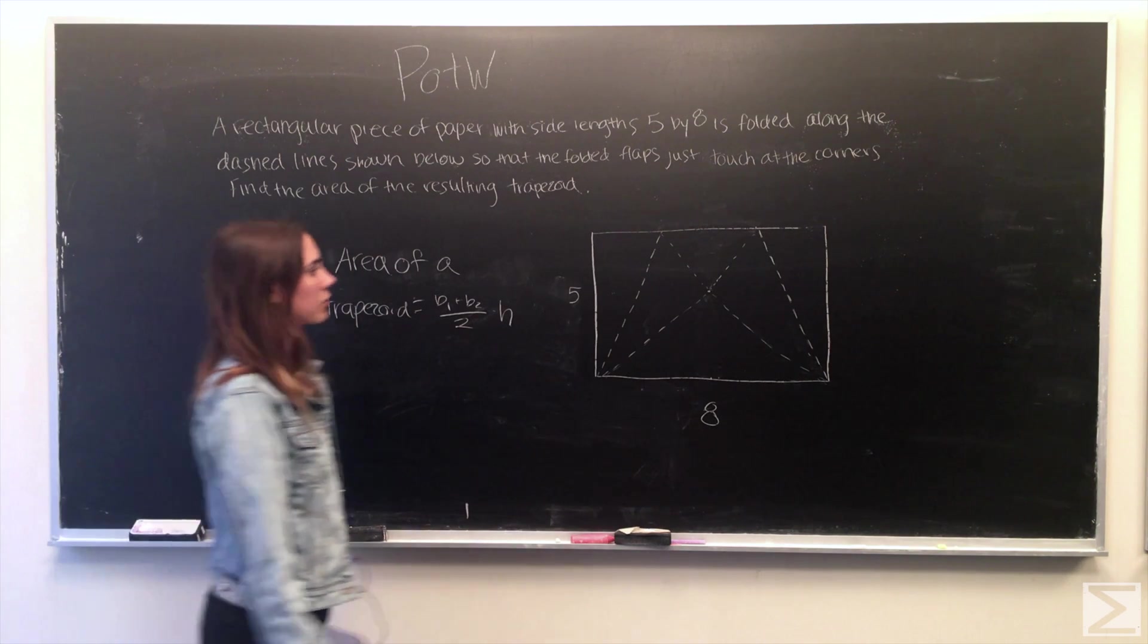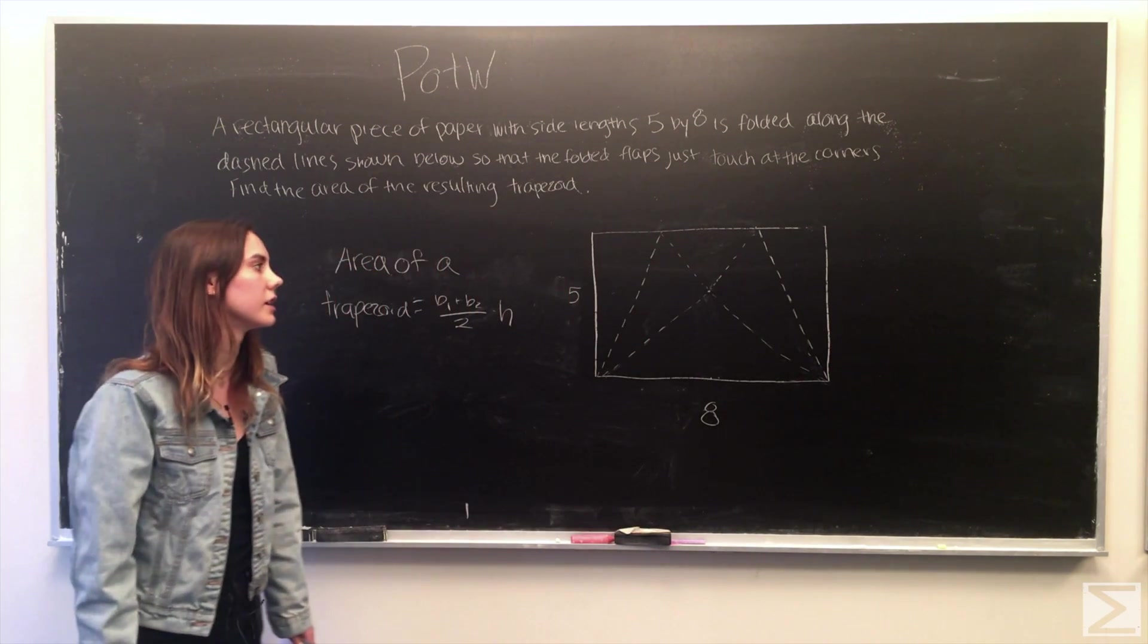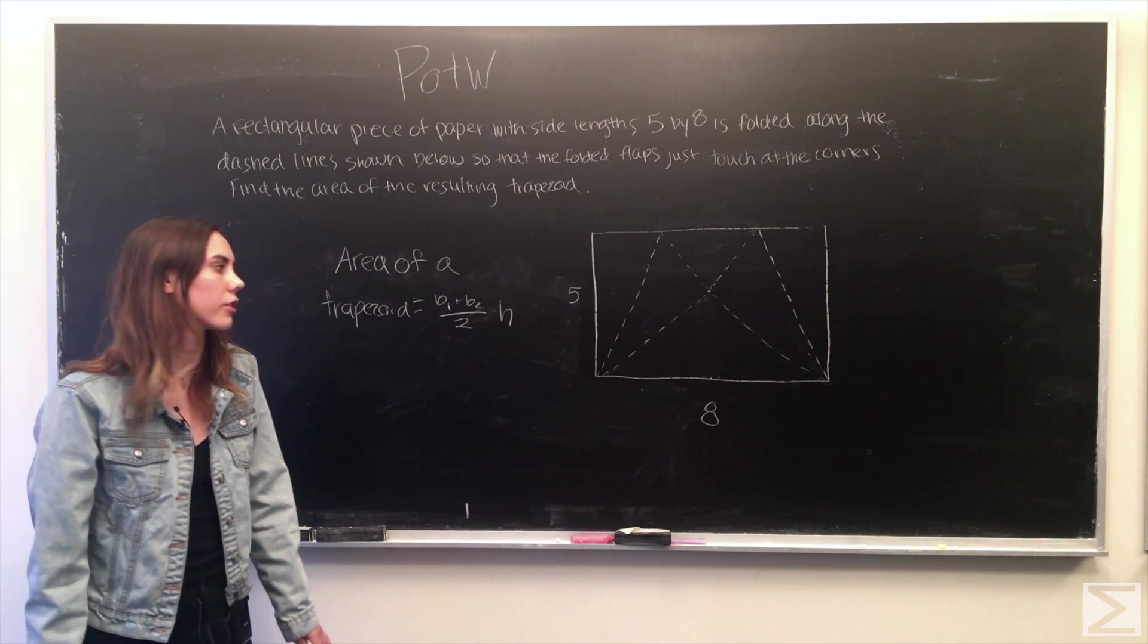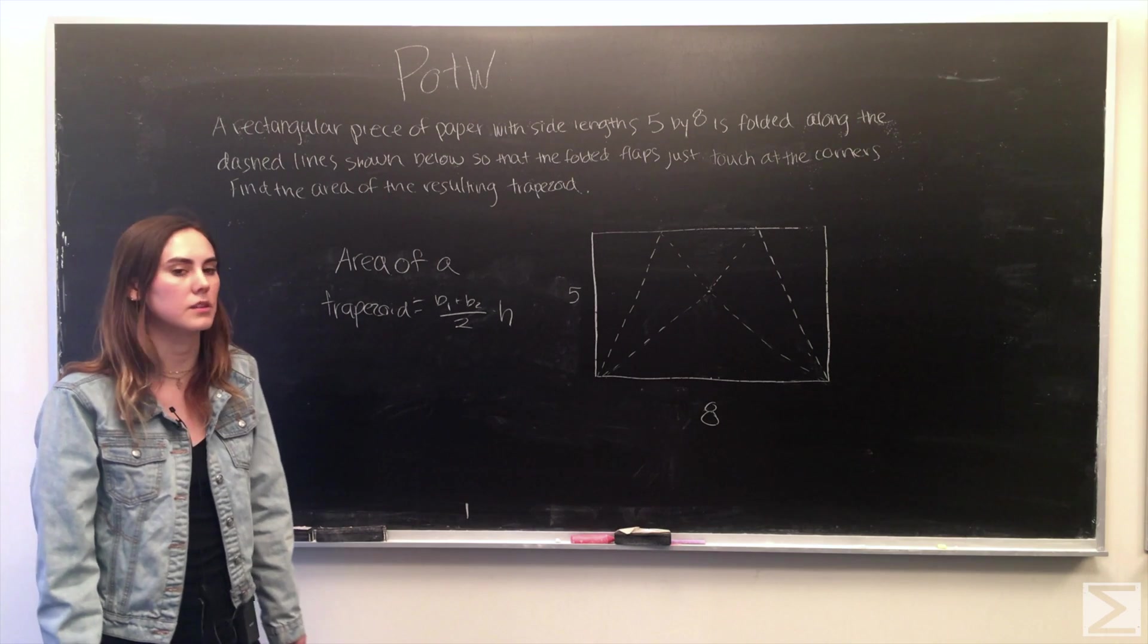Obviously the resulting trapezoid is here and what we first want to do is drop a line straight through the center through where the corners touch and kind of bisect the base on the bottom.